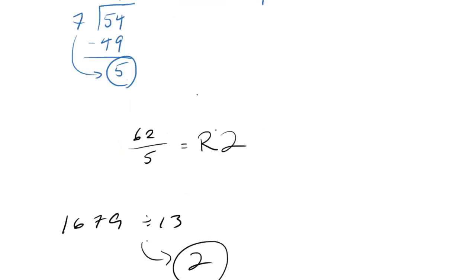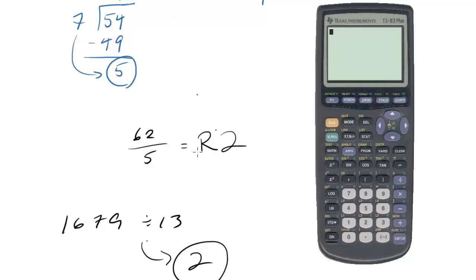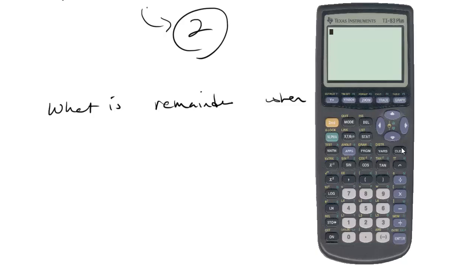So another mistake that students will make is they'll say oh let's say for example we have this case. What is the remainder when 63 is divided by 9? Well they go to their calculator and say okay 63 divided by 9 and you get 7 and they might say well okay then the remainder is 7.